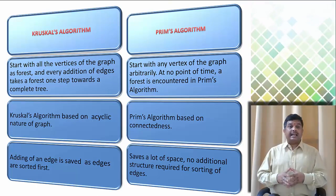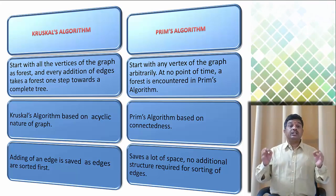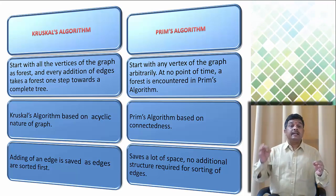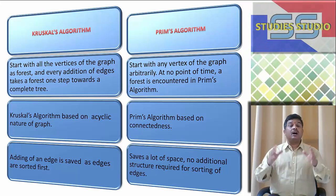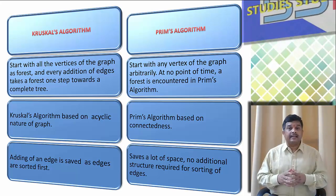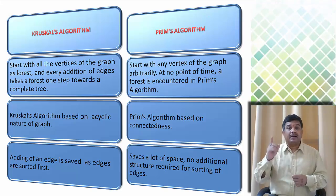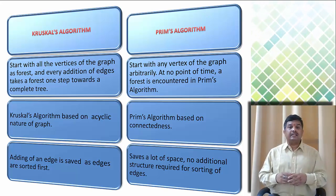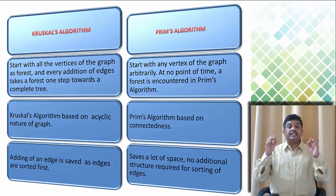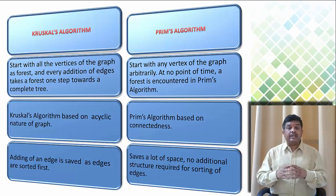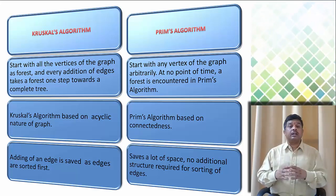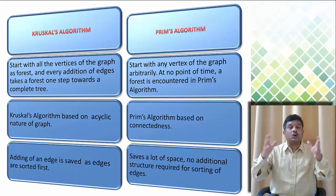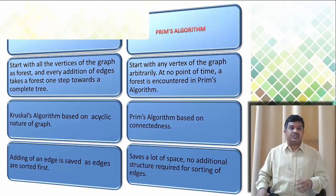The third difference: under Kruskal Algorithm, addition of an edge is saved as an edge in a sorted list. But under Prim's Algorithm it saves a lot of space because there is no additional structure required for sorting of the edges.